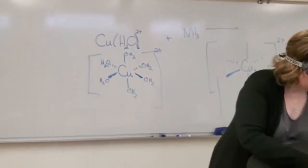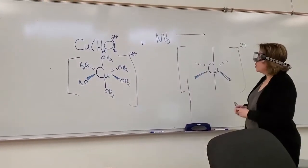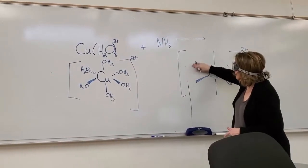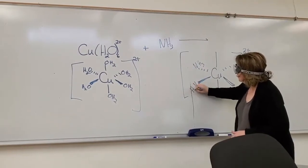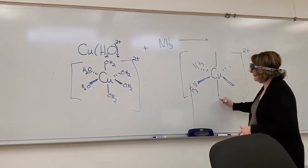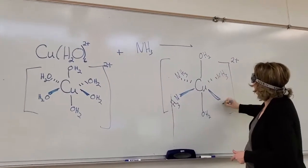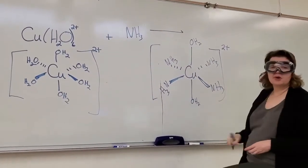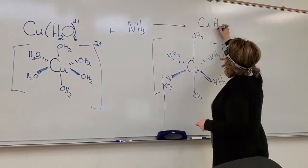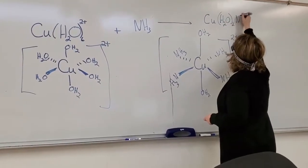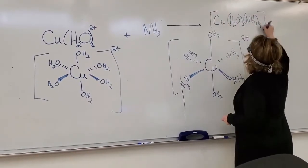Let's talk about what that chemistry is here. As I add the ammonia, four of the waters, eventually if I add enough, four of the waters will be displaced with ammonias. The axial positions are going to stay as water. Those axial positions are extra sticky with those waters. So this is that deep cobalt blue. Here is my complex ion. I still have two waters, and I have four of the ammonia groups. Still a plus two charge.